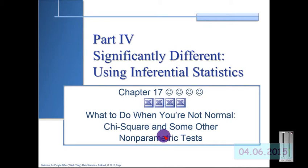Chapter 17 gives us a statistics test that we can use when our data is not normal. By normal, we are referring to whether or not the assumptions of the normal curve can be expected.